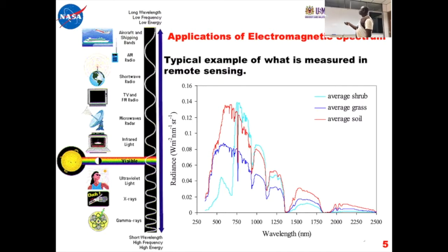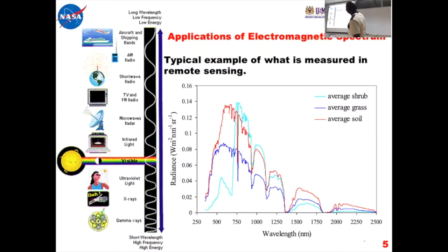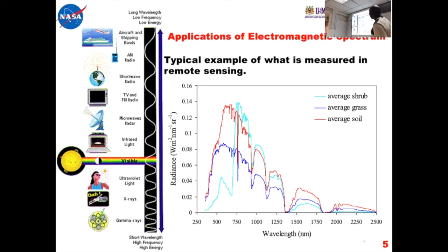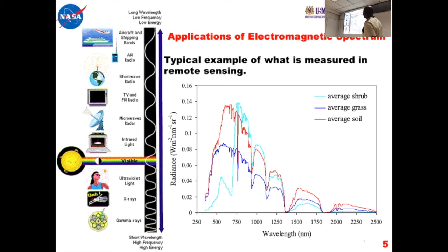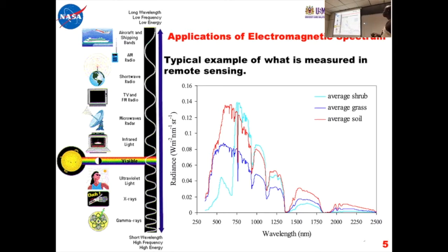This is the application of EM. We apply EM in everyday life — the TV, for example — but our main concern is the visible light aspect of the EM. This is where X-rays and gamma rays are being applied. And this is what is measured using remote sensing.